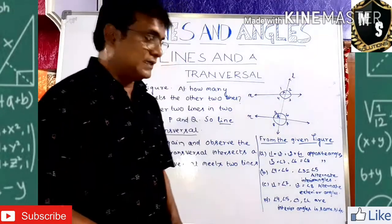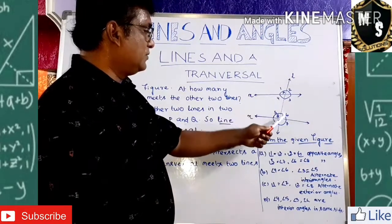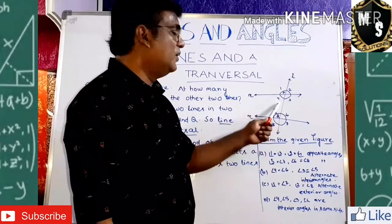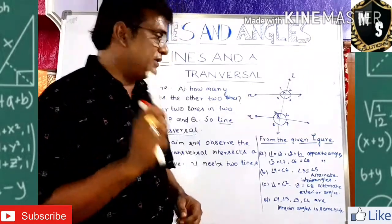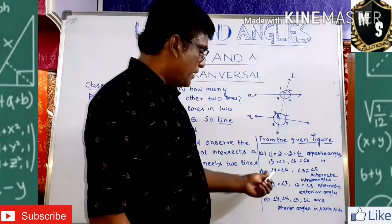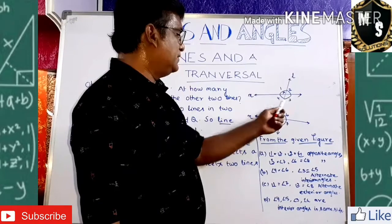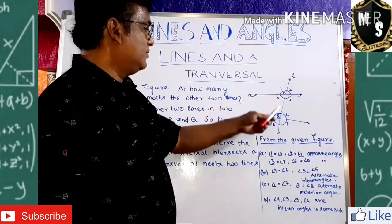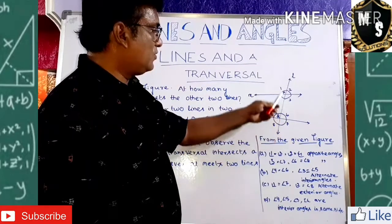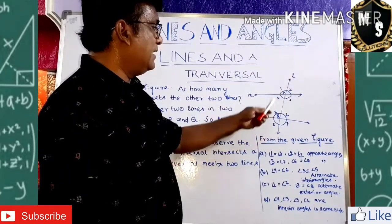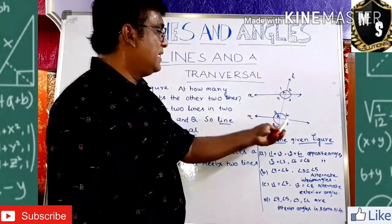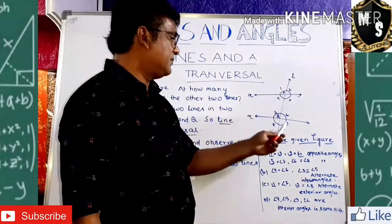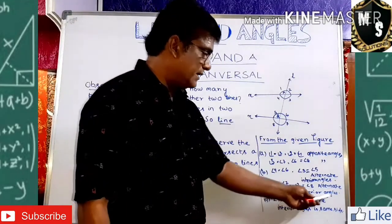Next, angle 4 is equal to angle 6, and angle 3 is equal to angle 5. These are called alternate interior angles because they are in the interior of the lines. Similarly, angle 1 is equal to angle 7, and angle 2 is equal to angle 8. These are called alternate exterior angles. So angles 4 and 6, and 3 and 5 are alternate interior angles, whereas angles 1 and 7, and 2 and 8 are alternate exterior angles.